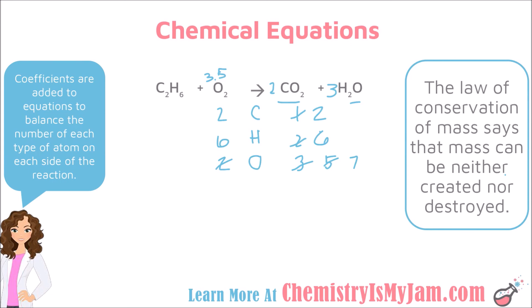Technically the equation is balanced with a 3.5 coefficient, but decimals are undesirable. To fix this, when you have a .5 decimal, multiply all coefficients by 2 to make them whole numbers. So the coefficient becomes 2, then 7, then 4, then 6 — and now you have a balanced equation where everything is a whole number.